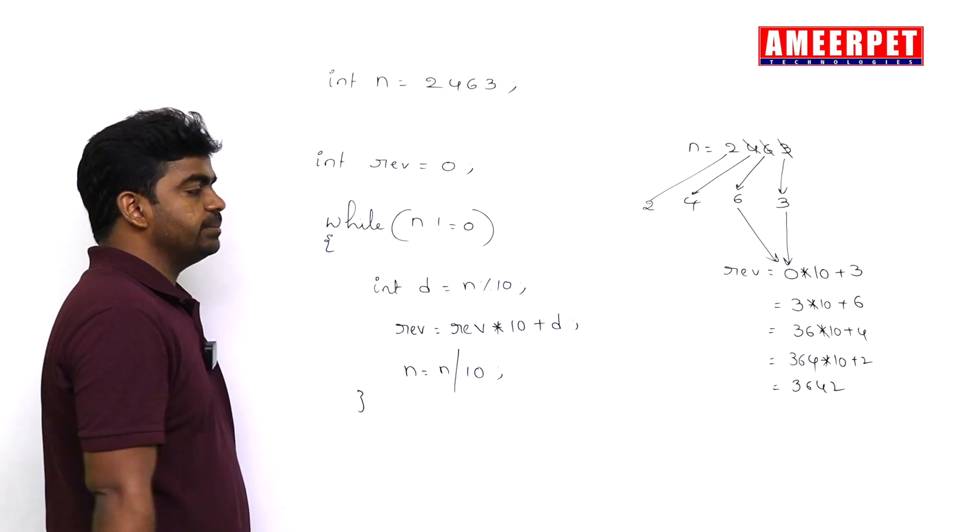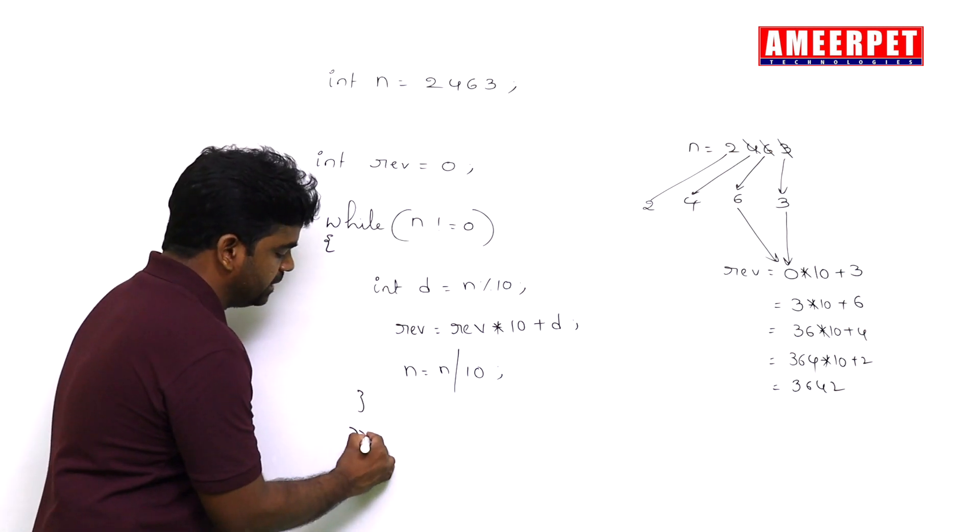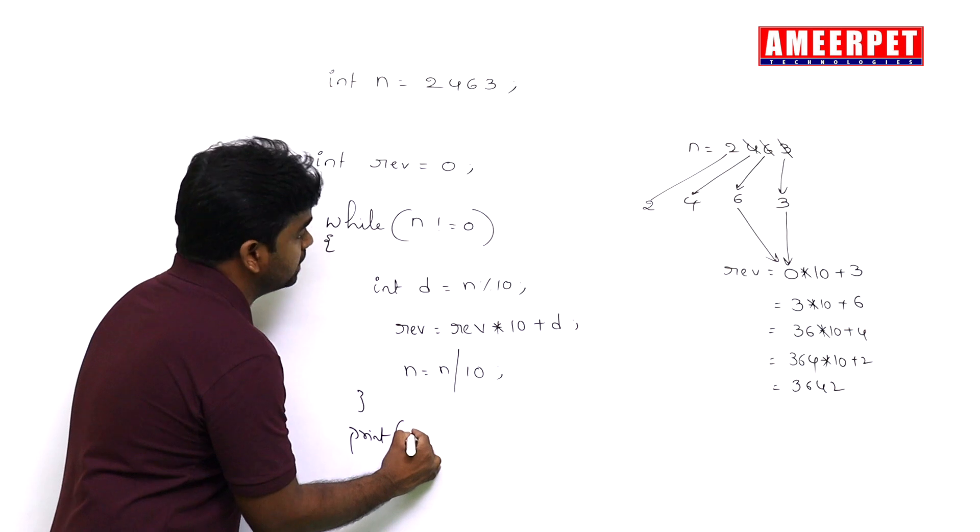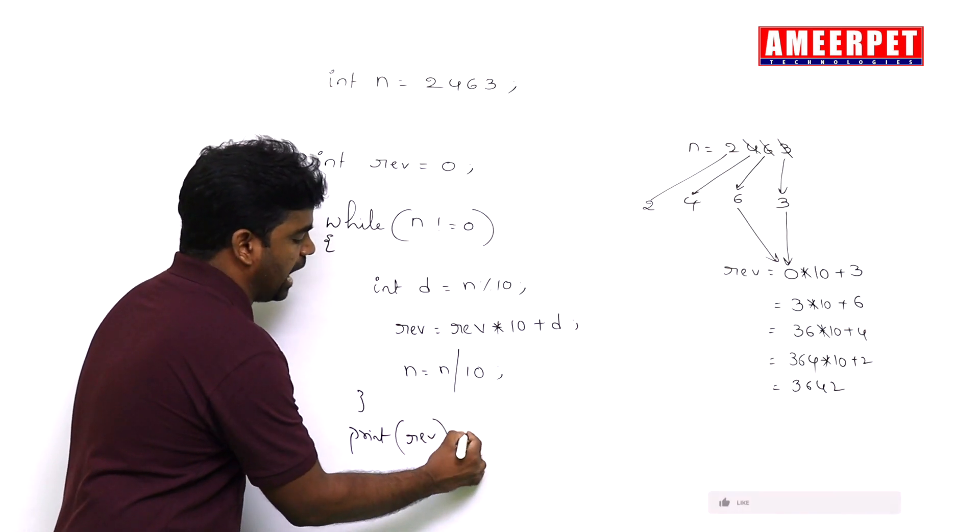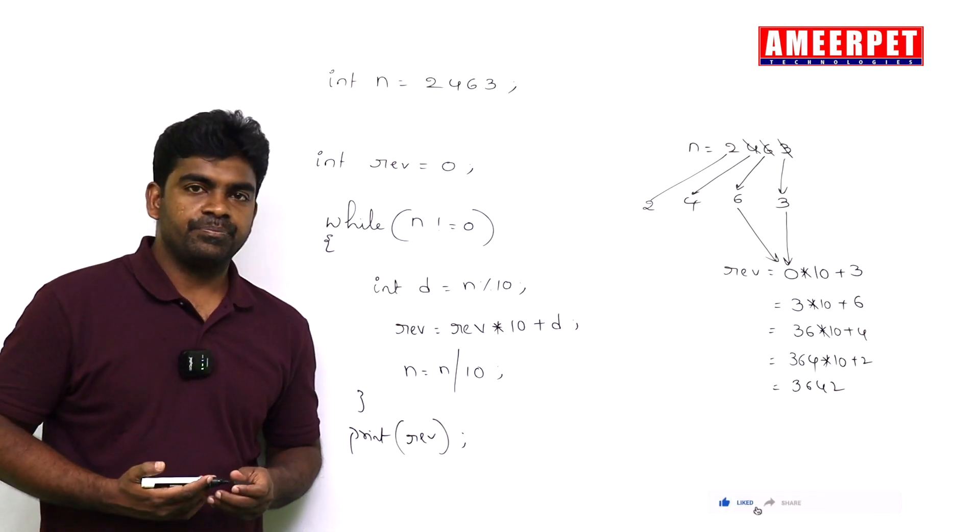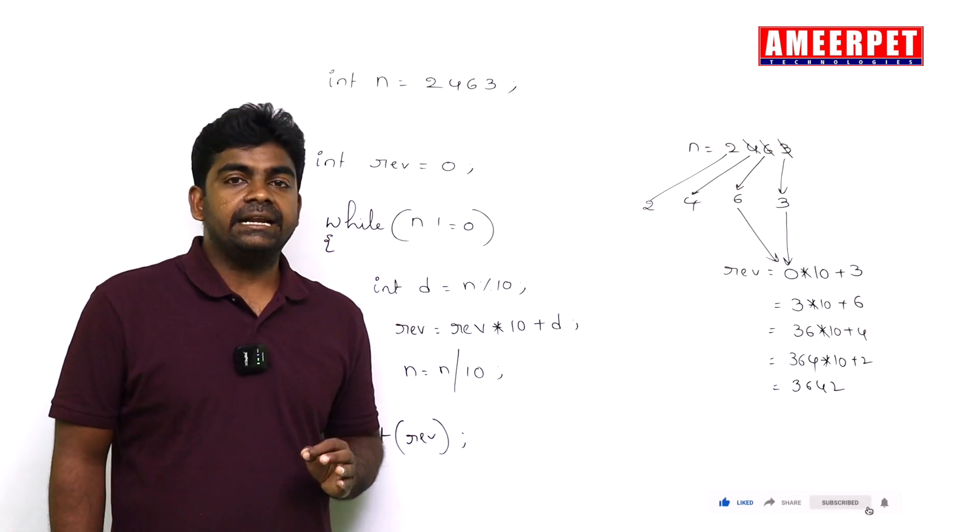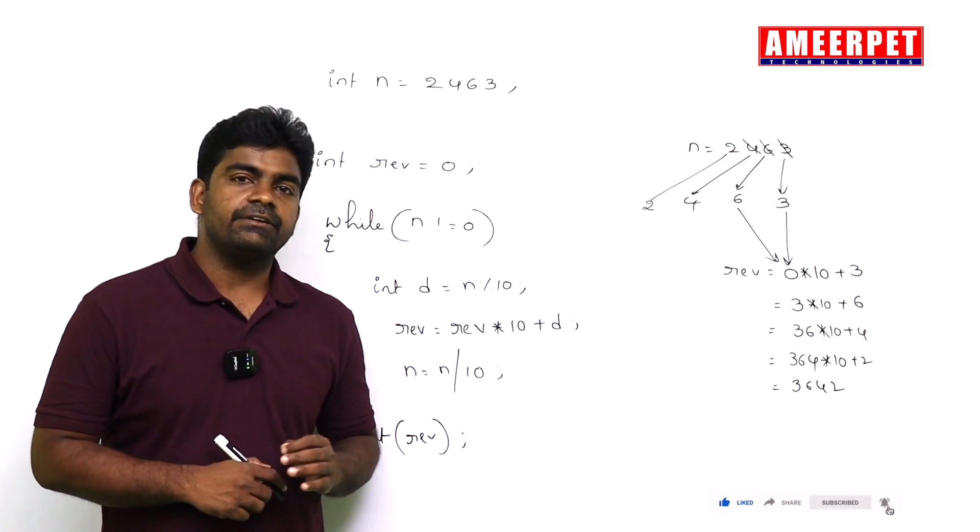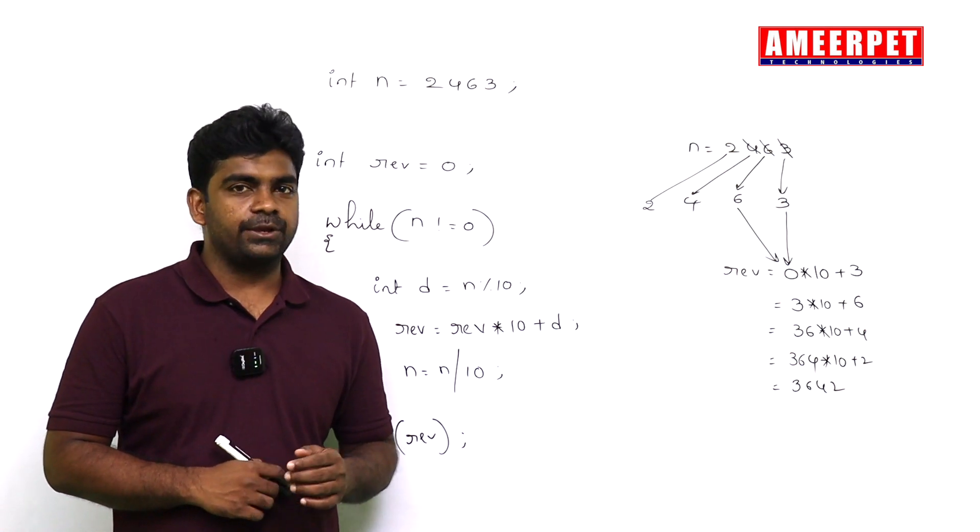So after that the value becomes 0, it will be terminated. Simply we are printing that the reverse number is rev. This is the simple way of finding the reverse number for the given number. Hope you understood, thank you all.